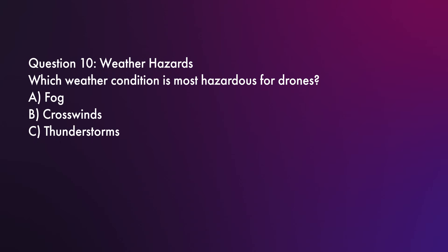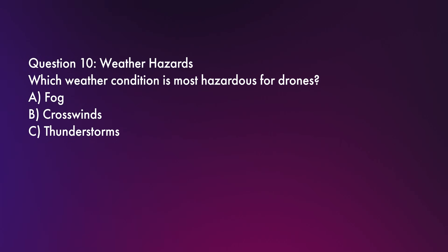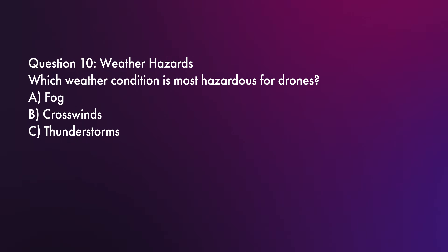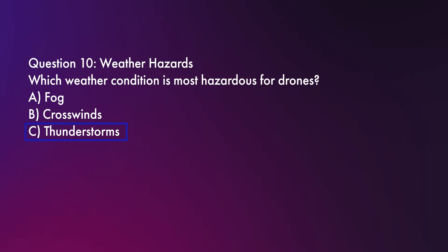Question number 10: Which weather condition is most hazardous for drones? A, fog; B, crosswinds; or C, thunderstorms. Maybe there should be a D — all of the above — because none of these are great for flying a drone. But one is definitely worse than the others: C, thunderstorms. Thunderstorms combine wind shear, lightning, and turbulence, making them extremely hazardous for drone flights. Just don't fly your drone in a thunderstorm, even if it would look really cool. It's a bad idea.